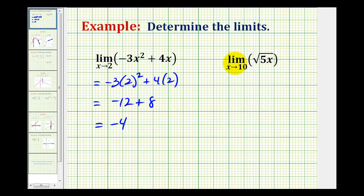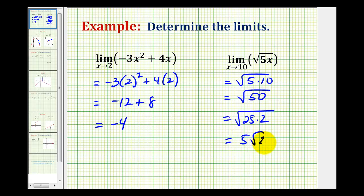So if we replace x with 10, we have the square root of 5 times 10, which is equal to the square root of 50, which does simplify nicely because 50 does have a perfect square factor. So this limit is equal to 5 square root 2.